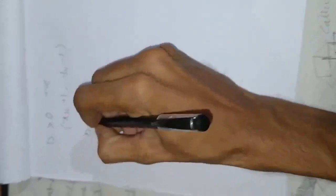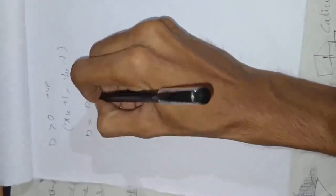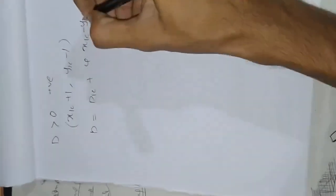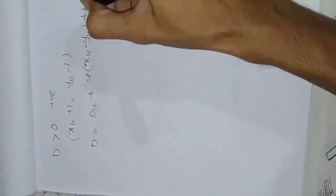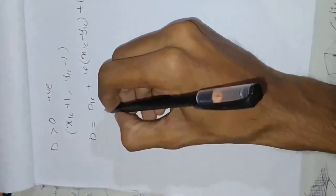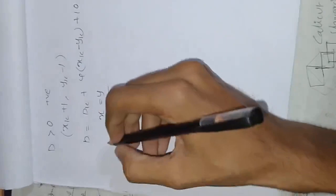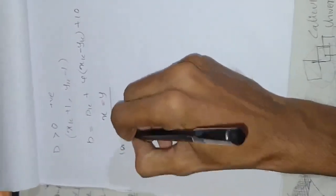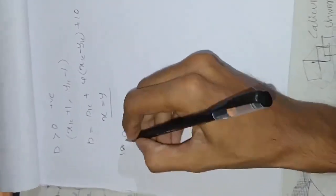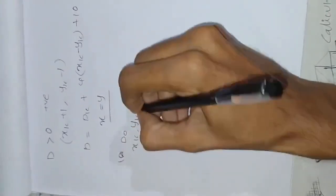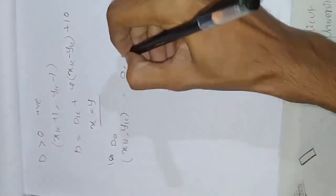If D is positive or equal to zero, we choose xk plus 1, yk minus 1 as the next point. The decision parameter update is Dk plus 1 equals Dk plus xk minus yk plus 10. We continue until x is equal to y. Next, we calculate the initial decision parameter D0.